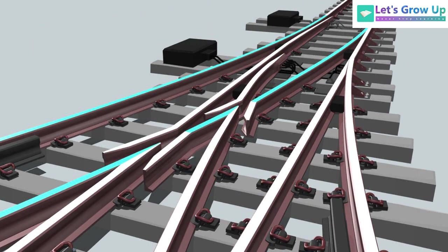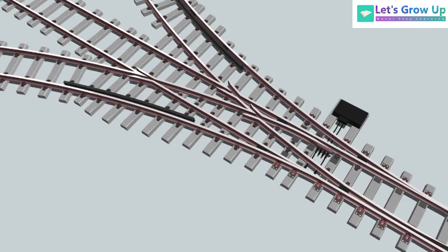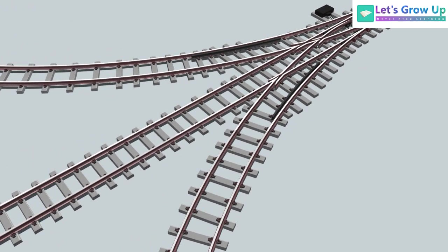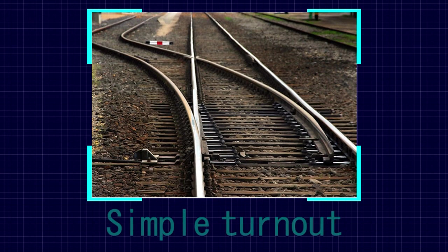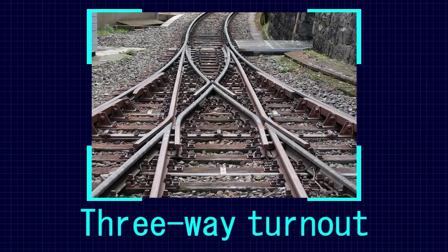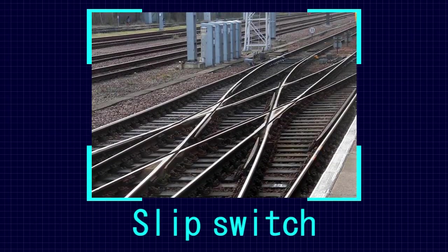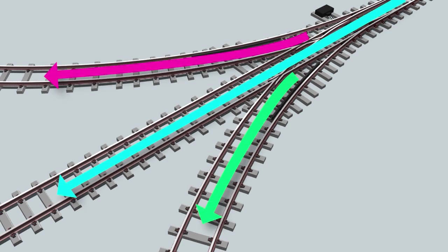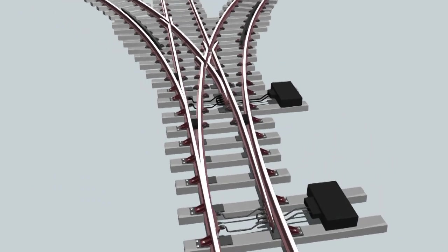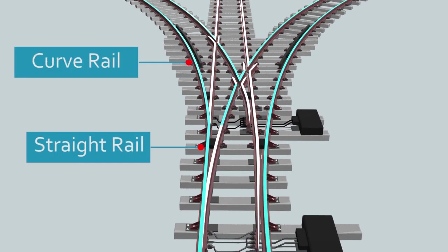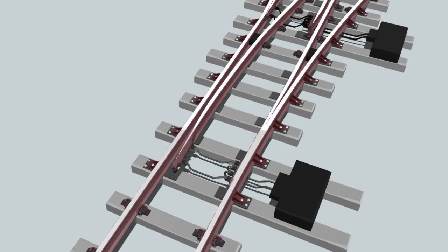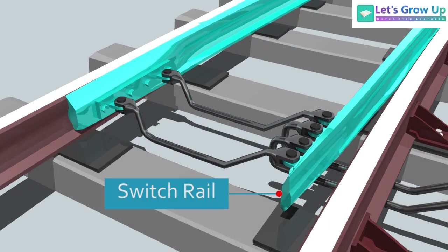The railway switch is used to allow the train to switch to another track. A three-way track crossing is a type of railway switch or turnout. There are many kinds of railway switches, like simple turnout, equilateral turnout, three-way turnout, and slip switch. A three-way turnout bifurcates from the main track to three different directions. It usually consists of a straight rail, two curve rails, two switch rails, and three frogs.